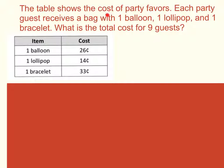The table shows the cost of party favors. Each party guest receives a bag with one balloon, one lollipop, and one bracelet. What is the cost for nine guests? So all of our numbers are circled. We boxed in what it's asking us to do, and we underlined the question. So what's the total cost for nine guests? So first we have to figure out how much does one balloon, one lollipop, and one bracelet cost.